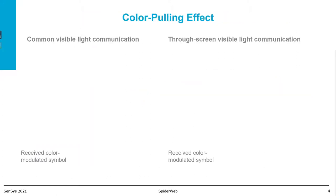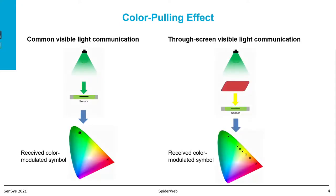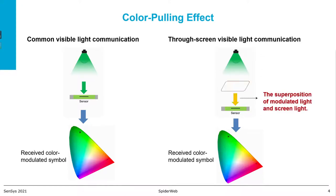We could instead consider the color domain. However, in through-screen VLC, because there is a screen in between, what the receiver detects is the superposition of the modulated light signal and the screen light.